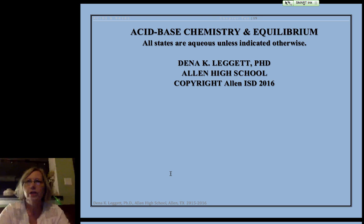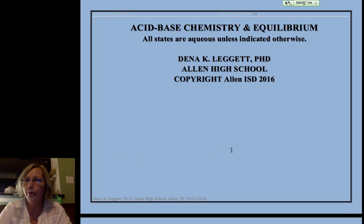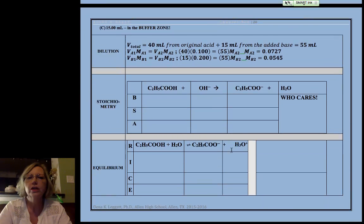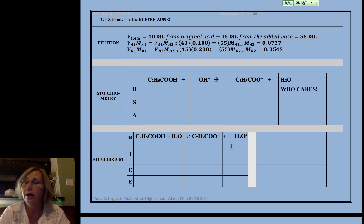Hi and welcome to Allen High School's discussion of acid-base chemistry. We're on our third point in a titration curve calculation, and we are smack in the middle of the buffer zone. That region on a titration curve, or a buffer in general, is a solution that resists changes in pH with the addition of small amounts of acid or base.